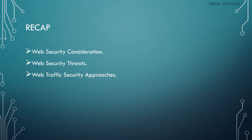After that, we covered web traffic security approaches — three major approaches to deal with web traffic security. First is IPSec, which works at the network layer. Second is SSL, the Secure Socket Layer, a security approach for the transport layer. Third is application-specific web security approaches.